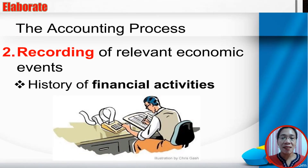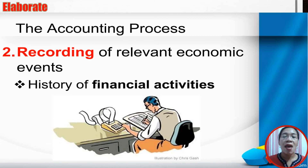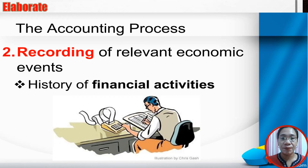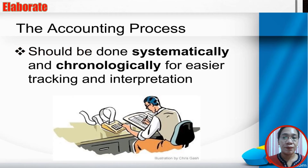The second step of the accounting process is recording of relevant economic events. You have to record all relevant economic events to learn the history of financial activities of a business, so you can keep track of the status of the business. The accounting process should be done systematically and chronologically for easier tracking and interpretation, and records of events are inputted in accounting books.